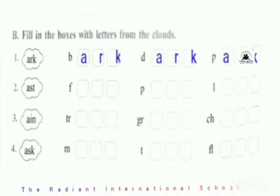In the third group, A-I-N: you have to make new words — T-R-A-I-N, train; G-R-A-I-N, grain; C-H-A-I-N, chain. In the fourth group, A-S-K: M-A-S-K, mask; T-A-S-K, task; F-L-A-S-K, flask. These are the rhyming words you have to make.